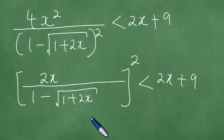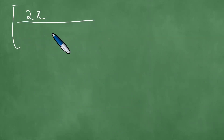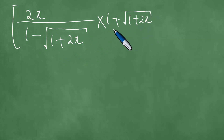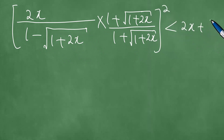We are showing that the left-hand side can be written as a perfect square. The left-hand side of the inequality can be written as: twice x divided by 1 minus the square root of 1 plus twice x. We then multiply by 1 plus the square root of 1 plus twice x, and divide by the same, squaring the left-hand side, which is less than 2x plus 9.